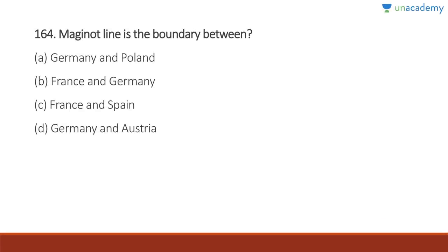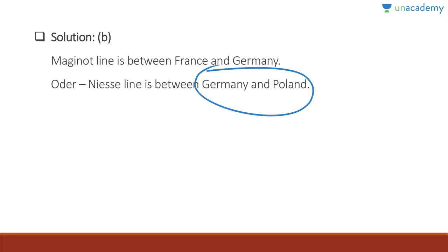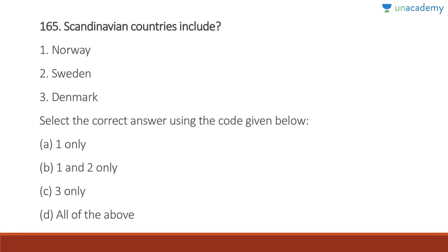Question 164: The Maginot Line is the boundary between France and Germany. The Oder-Neisse Line is between Germany and Poland. Answer is B. Question 165: Scandinavian countries include Norway, Sweden, and Denmark. Answer is D, all of the above.